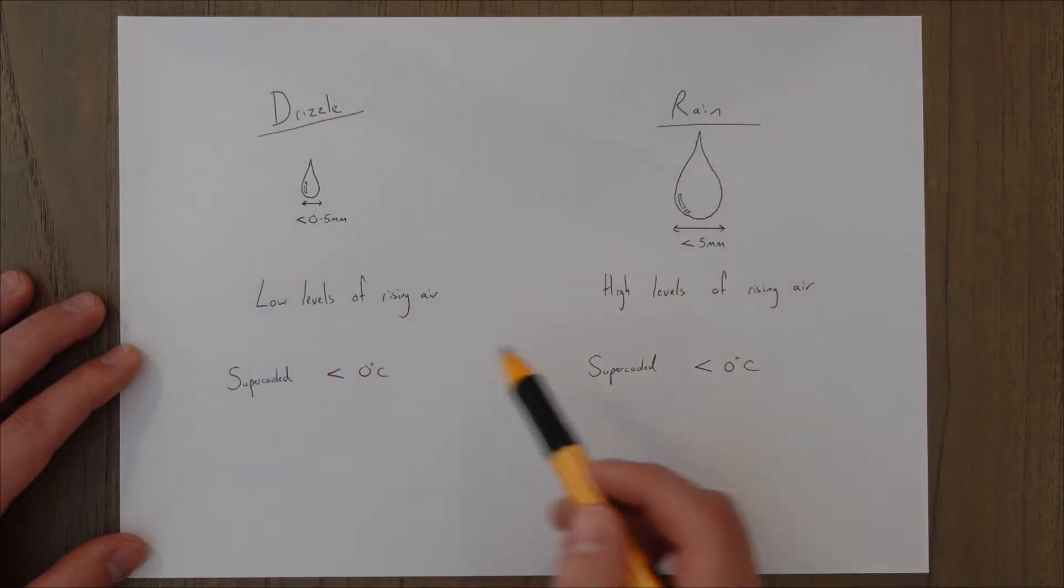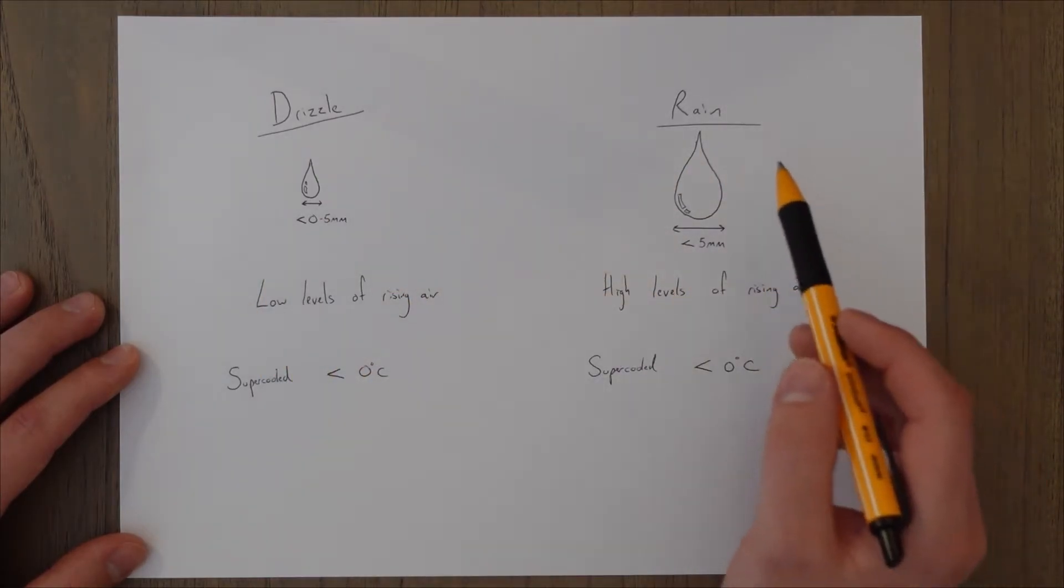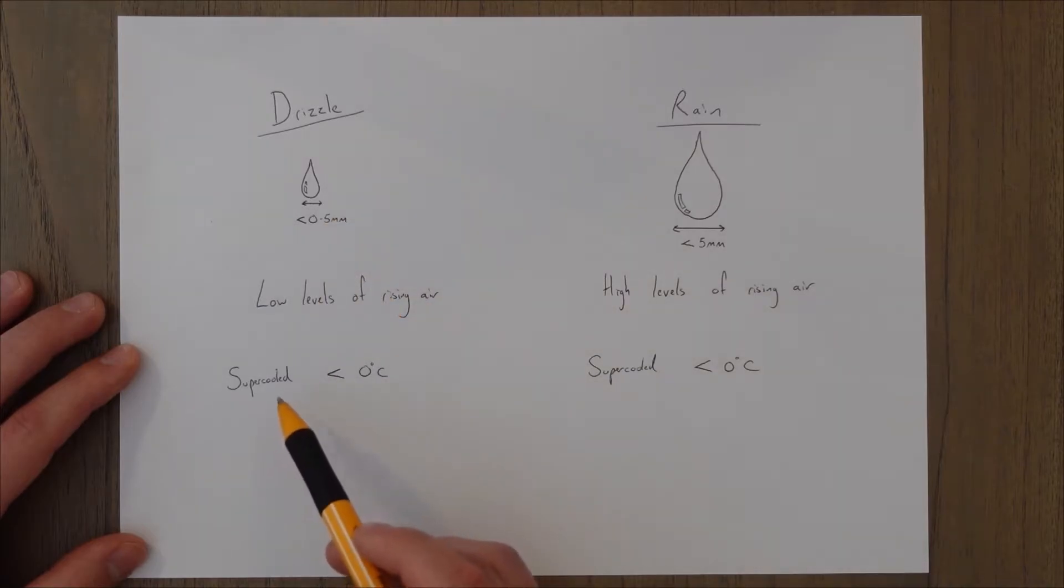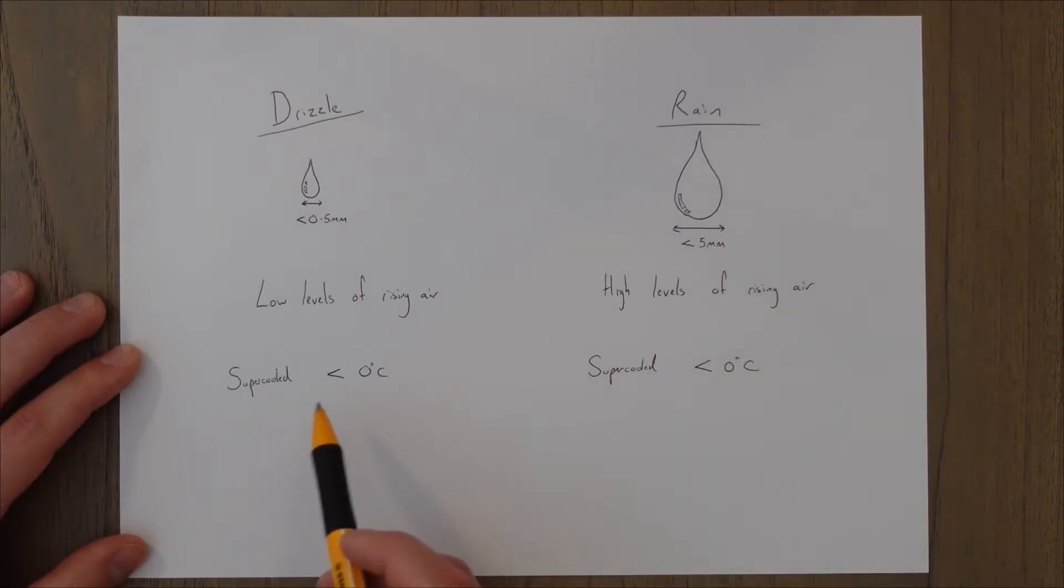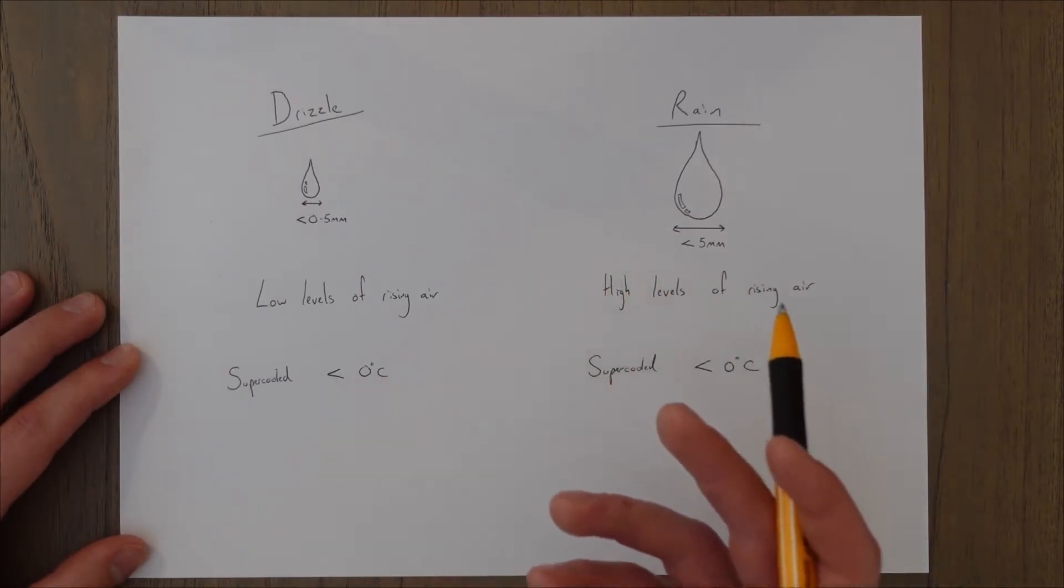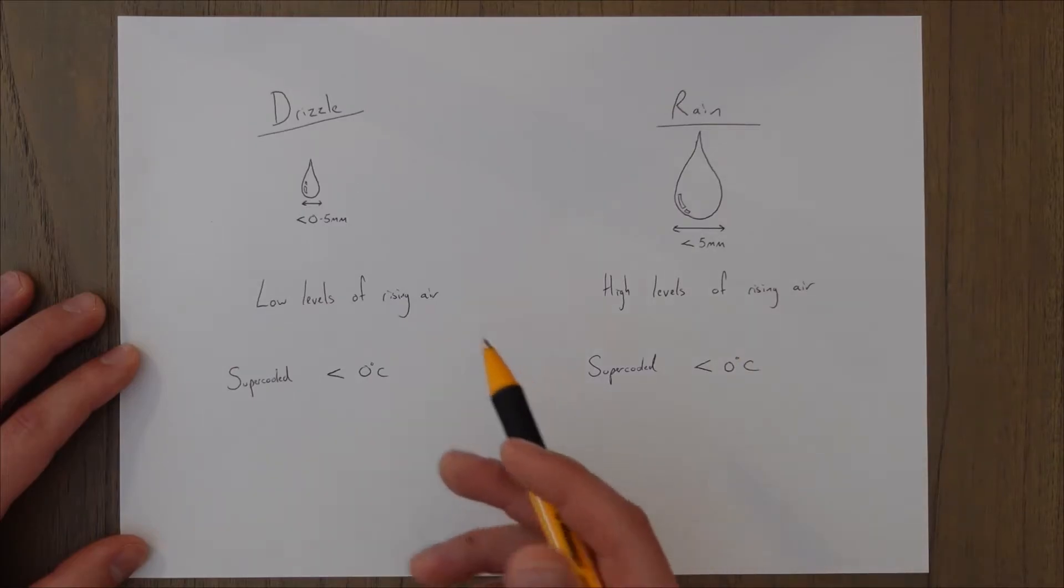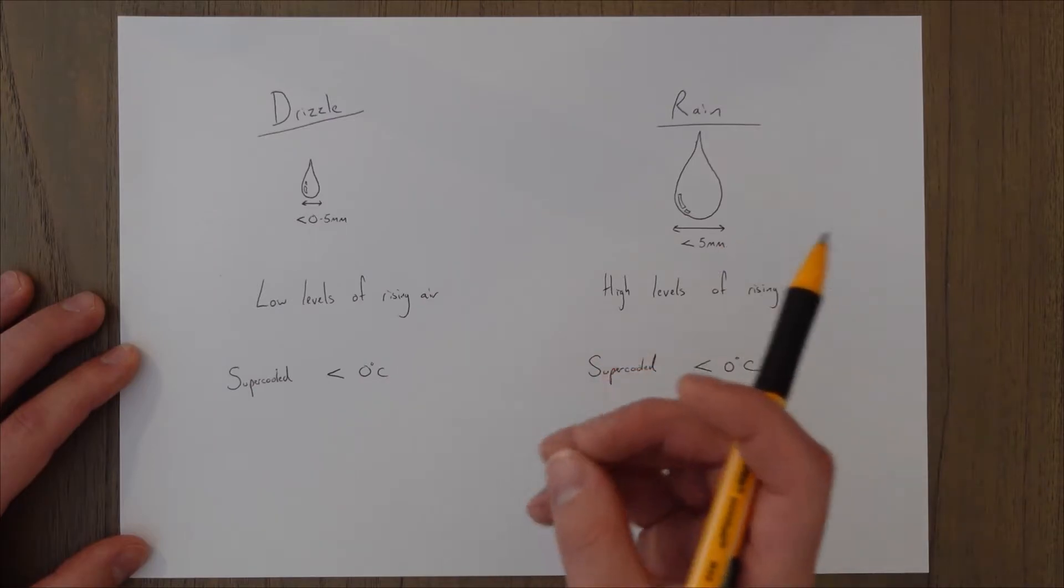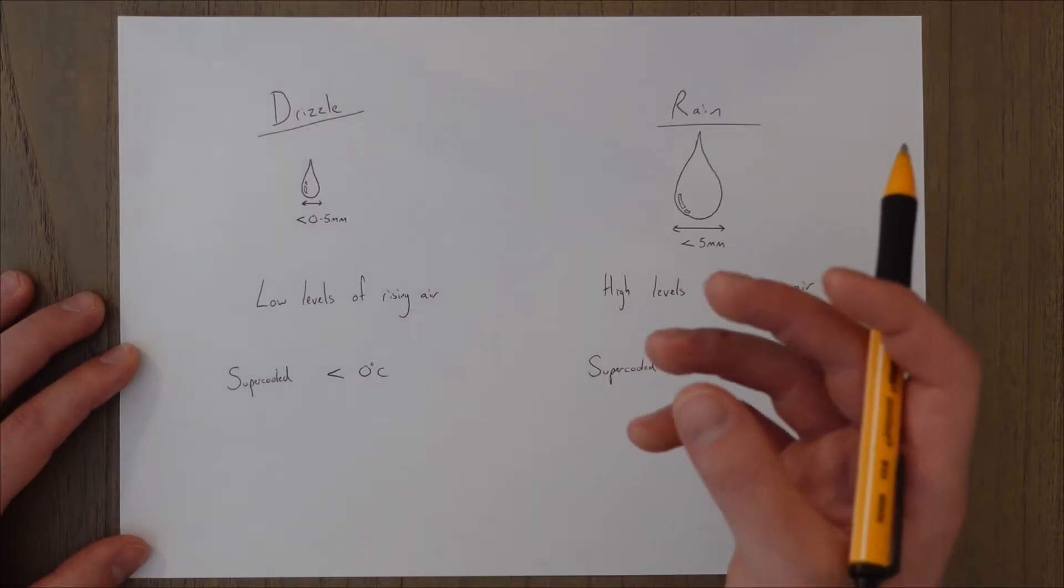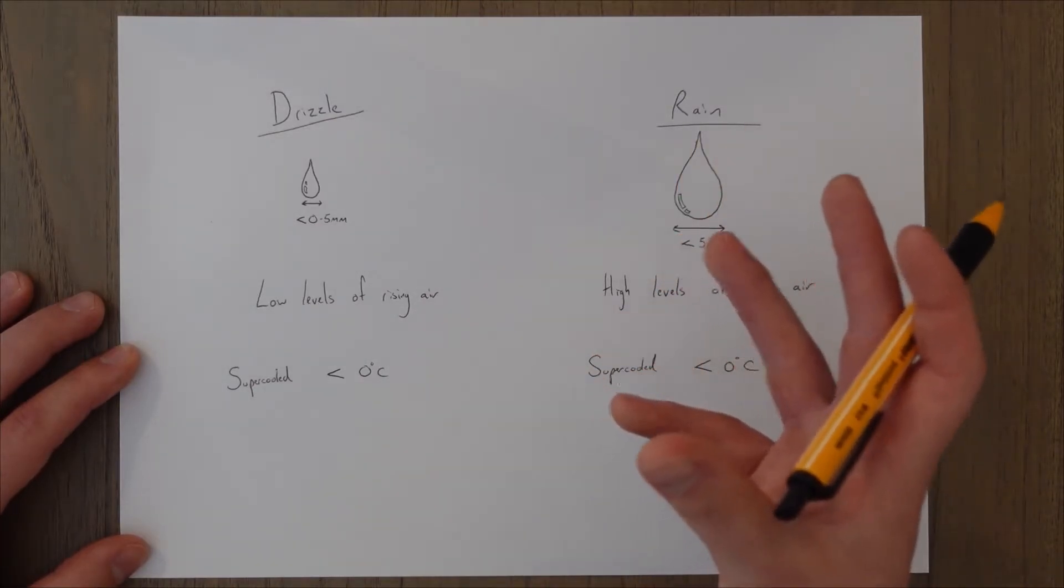It's important to note that we also have precipitation called freezing drizzle and freezing rain which is when the drizzle or rain droplets are supercooled to below zero degrees Celsius but still in liquid form.